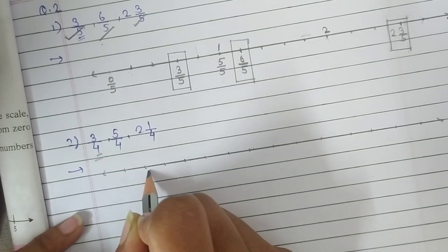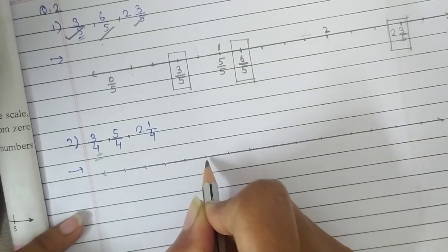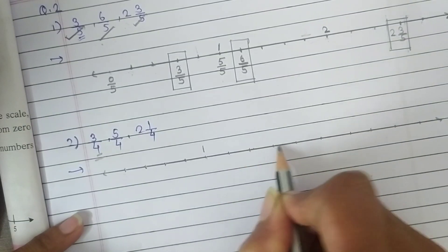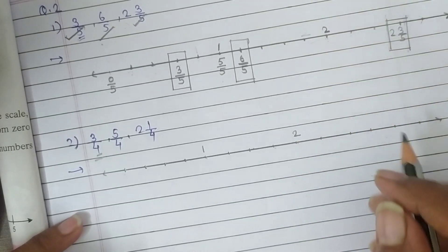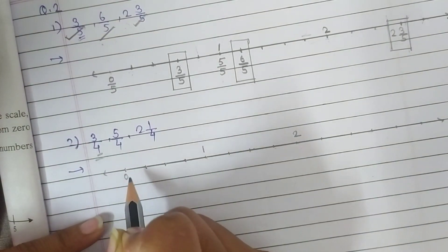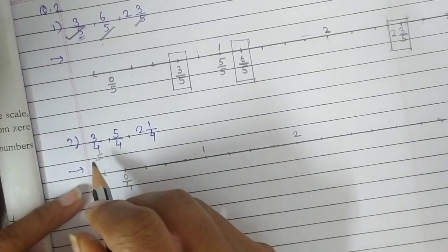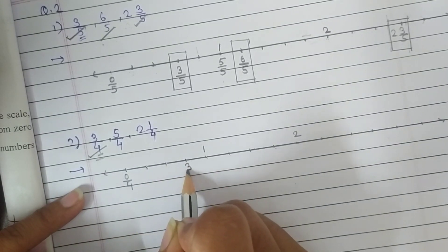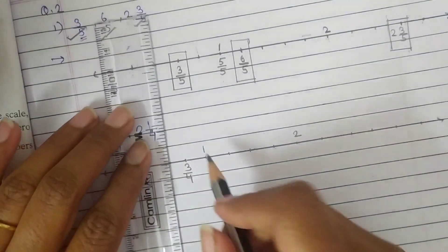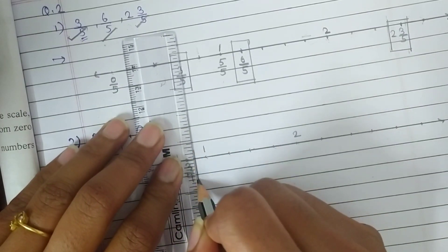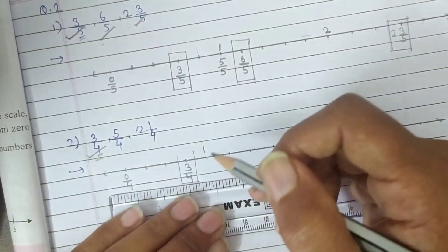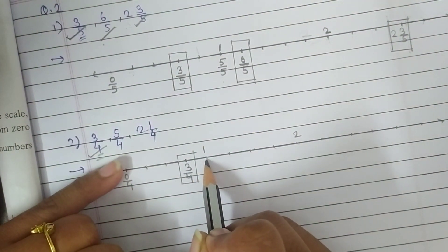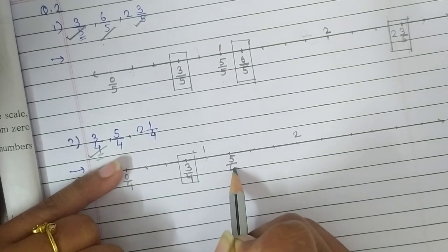The fraction on the first part is 0 upon 4. They ask us to show 3 upon 4, so here is 1 upon 4, 2 upon 4, and 3 upon 4 — let's make a box for our answer. The next fraction is 5 upon 4. Here the fraction 4 upon 4, and here our answer is 5 upon 4 — make a box.